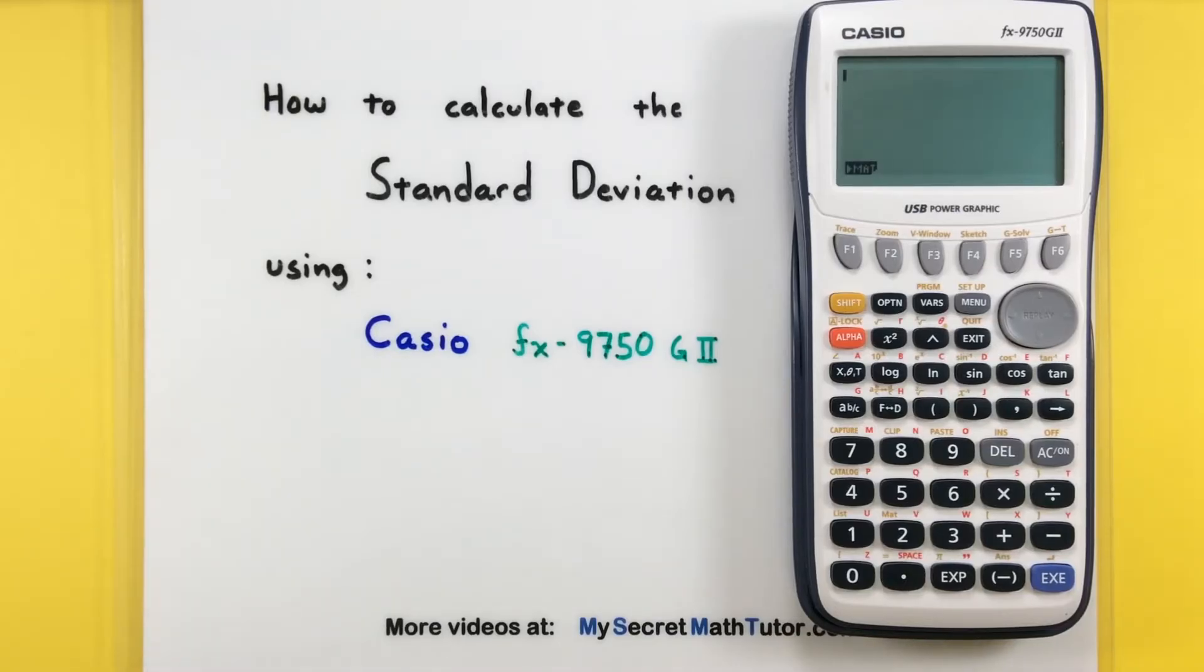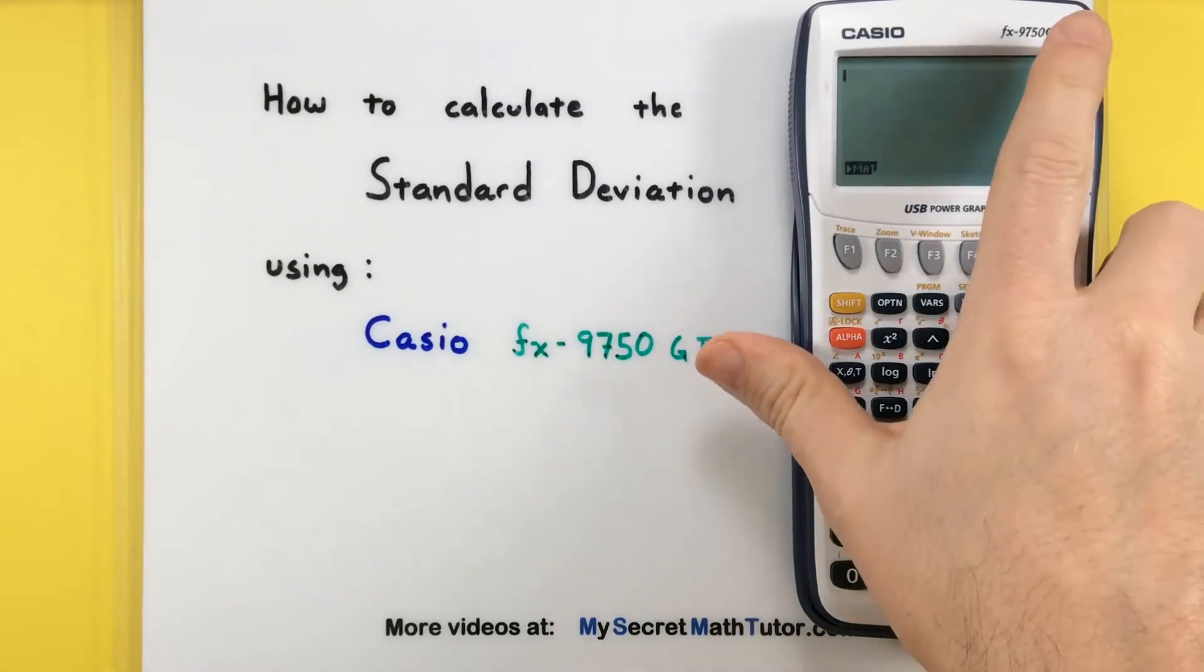It's a fairly simple process. We need to get the data into the calculator, and then it will calculate the standard deviation for us. Let's move on to that process.